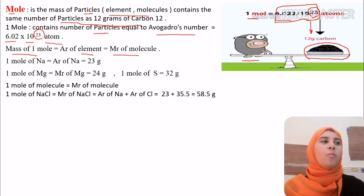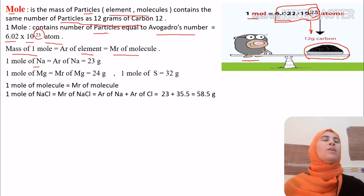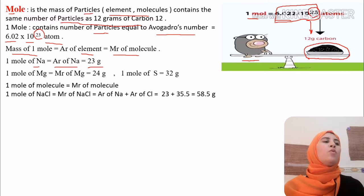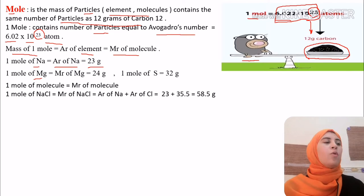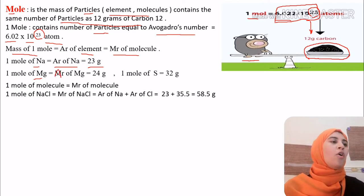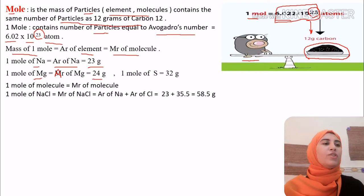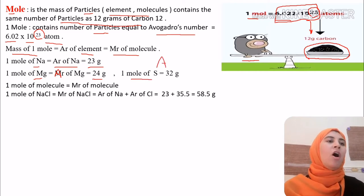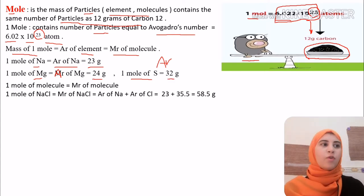One mole of an element equals its relative atomic mass. One mole of sodium equals the relative atomic mass of sodium: AR of Na equals 23 grams. One mole of magnesium equals AR of Mg equals 24 grams. One mole of sulfur equals AR of sulfur equals 32 grams, because we are talking about solids.